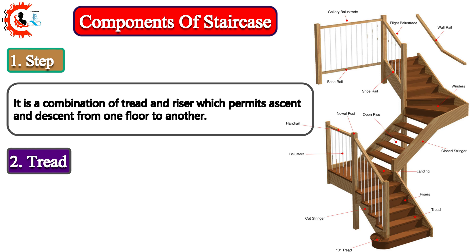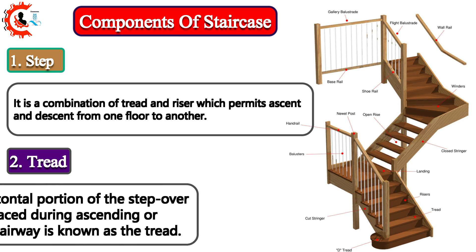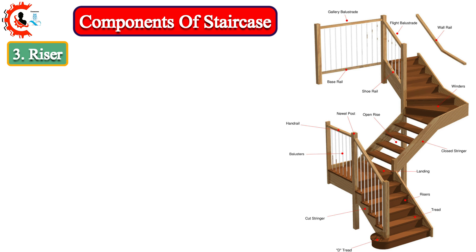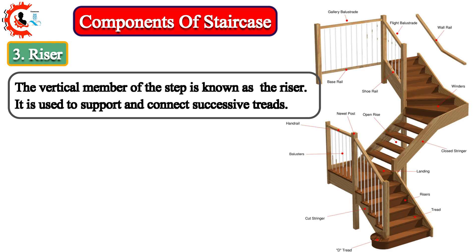2. Tread: The upper horizontal portion of the step over which the foot is placed during ascending or descending a stairway is known as the tread. 3. Riser: The vertical member of the step is known as the riser. It is used to support and connect successive treads.